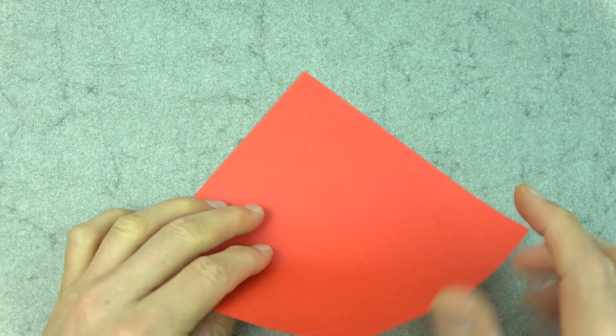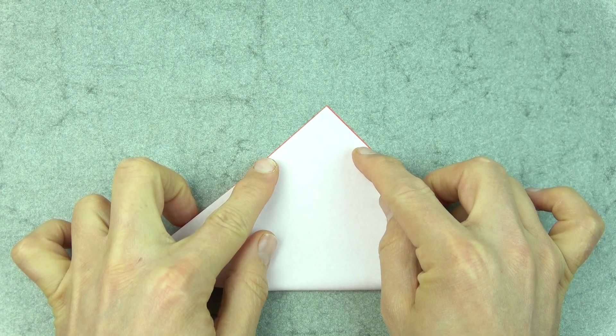Let's begin with the colored side up and folding half diagonally in both directions.